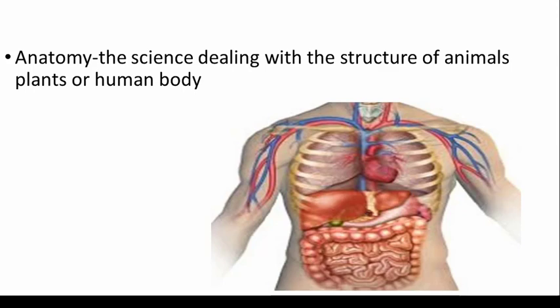Next is anatomy. Anatomy is basically the science dealing with the structure of animals, plants, or the human body. If you are referring it to a human, you say human anatomy; if to an animal, animal anatomy; if to plants, plant anatomy. So anatomy is the study of structure, and you can associate it with either plants, animals, or humans.